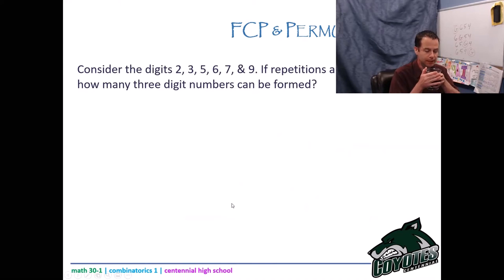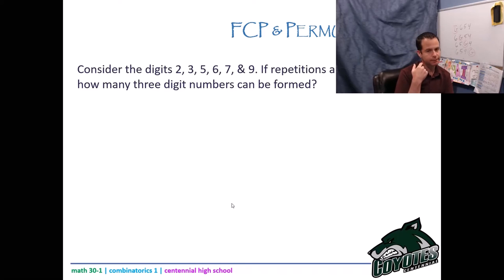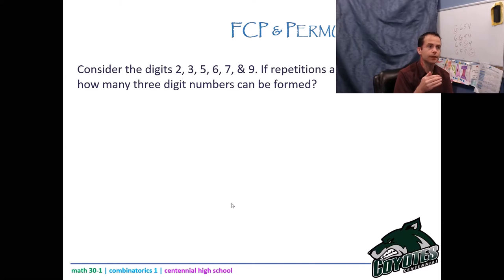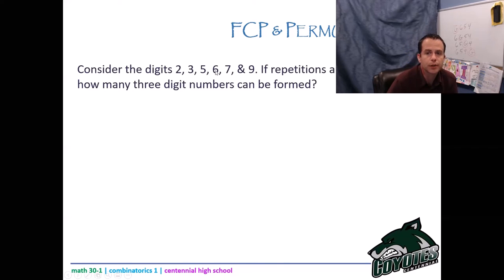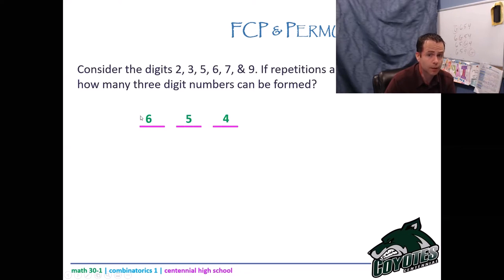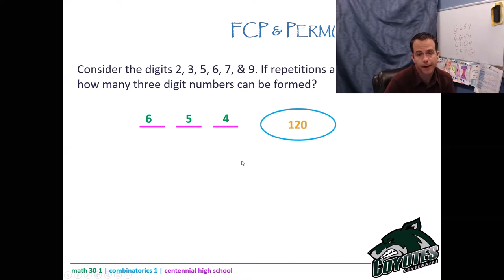Now we're going to do a similar question but with digits. Dealing with digits is harder than letters because our brain gets confused — the numbers you put in those spaces are always the number of options for that space, not the digits themselves. We're going to look at digits two, three, five, six, seven, and nine — repetitions are not permitted. How many three-digit numbers can be formed? I have six digits to play with. It's a three-digit number, so six options for the front, five for the next, and four for the last: 6×5×4 = 120.